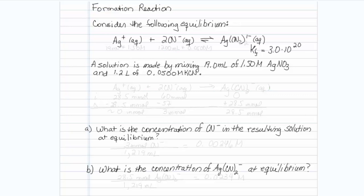We're given a reaction of silver plus, plus 2CN minus, making a silver cyanide ion complex, and we're given amounts of 19 mL of 1.5 molar silver and 1.2 liters of 0.0500 molar potassium cyanide.